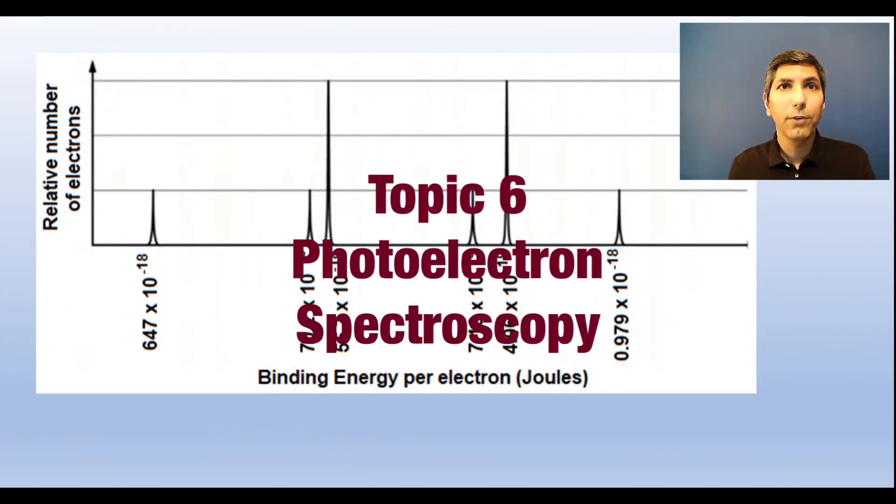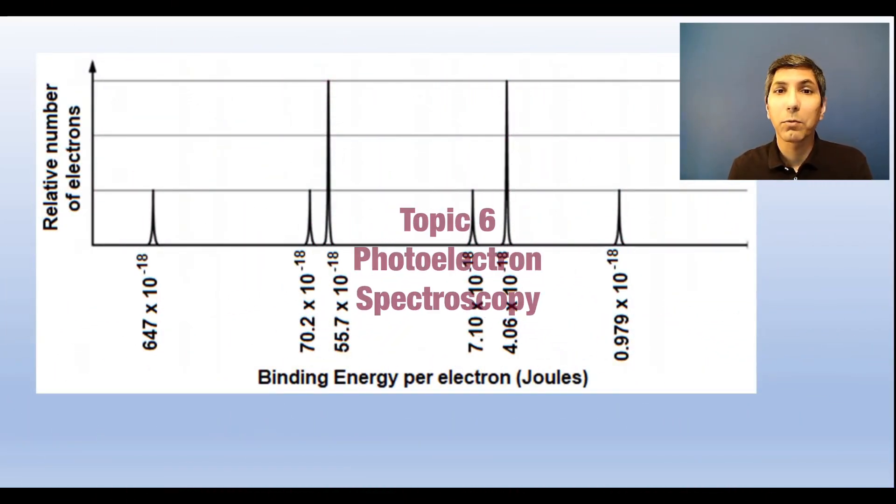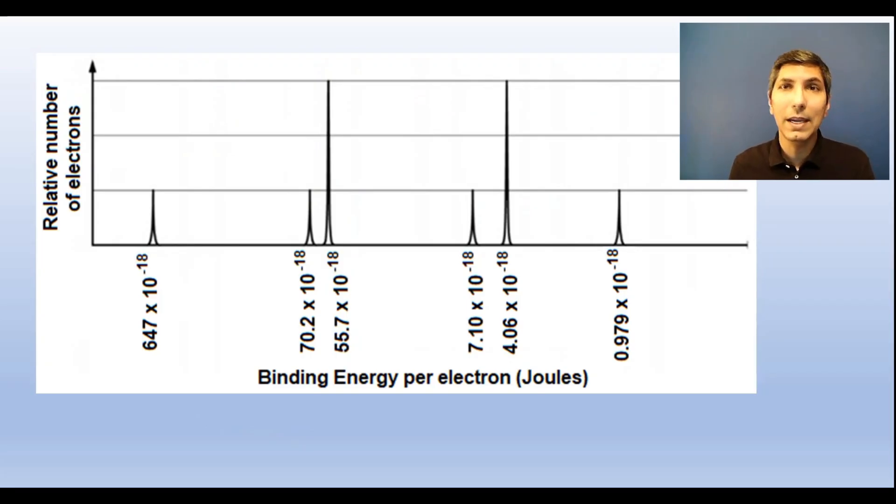You can identify an atom using photoelectron spectroscopy. If you can write an electron configuration, you can interpret a PES graph like this. All you have to do is label the peaks from left to right with the sublevels in increasing energy. So 1s, 2s, 2p, 3s, 3p, and 4s. And the relative heights of the peaks correspond to the number of electrons in each sublevel. All these s sublevels each have two, since they're all the same height. And these two that are higher are three times taller, so they must have six. So you can look at this and see that it ends with 4s2. So that means it must be calcium.